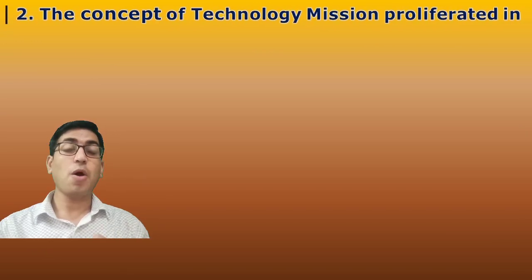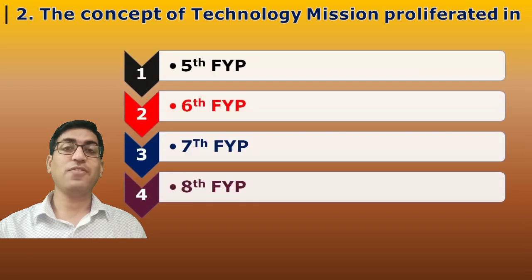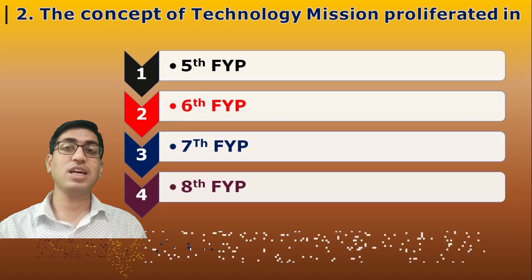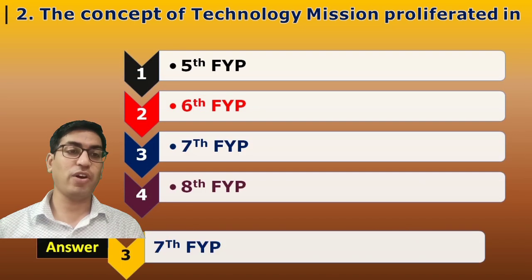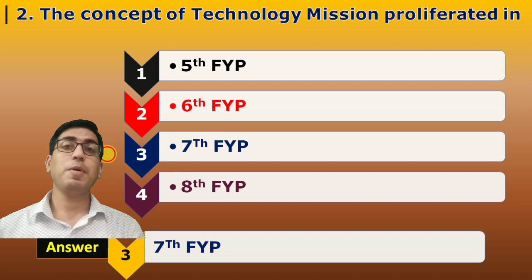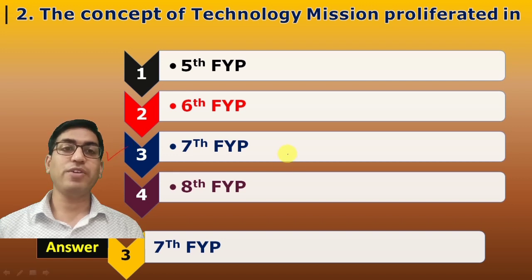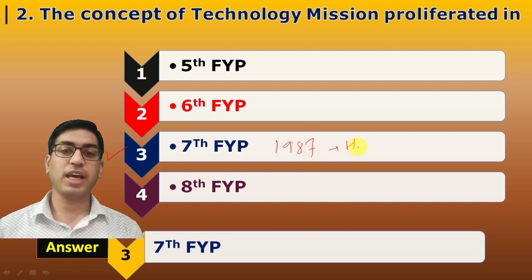Second question: The concept of technology missions proliferated in which Five-Year Plan? The answer is the Seventh Five-Year Plan. Keep in mind the concept of technology missions was introduced in the year 1987 by the honorable Prime Minister at the time, Mr. Rajiv Gandhi.